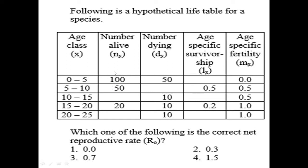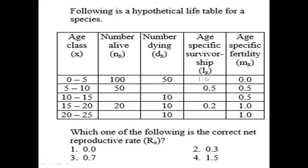Let us calculate Lx for each age group. For the 0–5 age group, Lx equals the number surviving at that age group divided by the total number initially born. Here the number initially born is 100, and the number surviving at this age group is also 100, so 100 divided by 100 equals 1. For the 5–10 age group, 50 are present, so 50 divided by 100 equals 0.5.